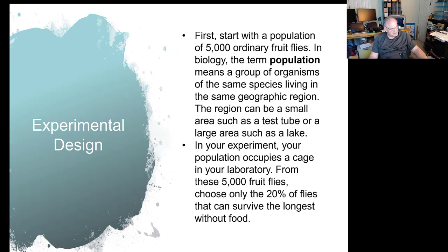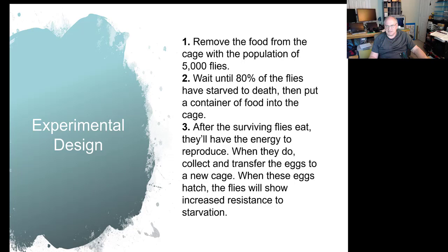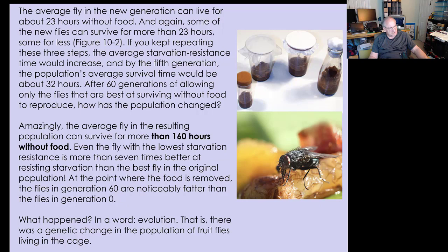The population is defined as the number of organisms in the same species living in the same geographical region. In this experiment, they removed the food and waited until about 80% of the flies had starved to death. The surviving flies were then allowed to reproduce, and the process was repeated. What they found was that some of the population survived 160 hours. The flies are maintained in little bottles with a fabric or stopper top to keep them contained — it's easy to control and makes for a perfect experiment.